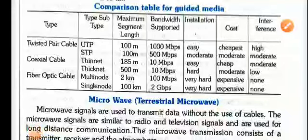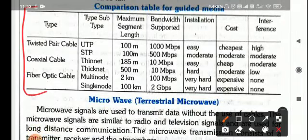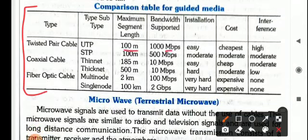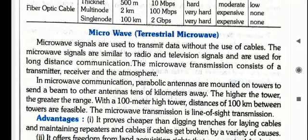Hello students, welcome back. In the Part 2 video we have seen how various transmission media are used, what are their bandwidth, what are their segment lengths, how the insulation affects their cause, and the interference — that is, the crosstalk. Now let's cover the further chapter.